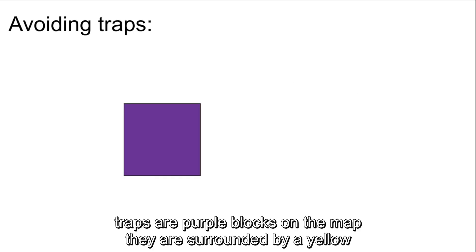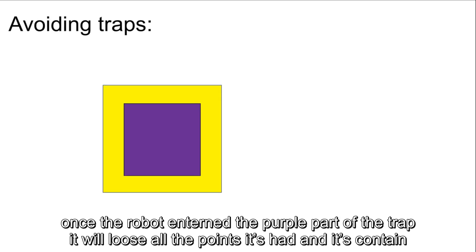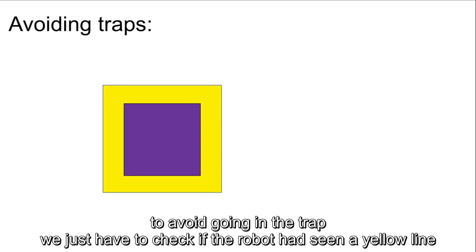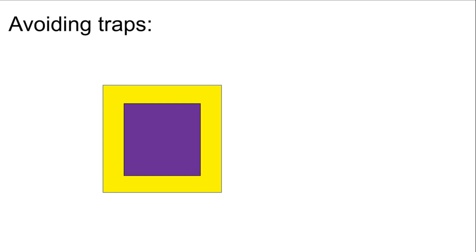Let's talk a bit more in depth about each challenge. Traps are purple blocks on the map that are surrounded by a yellow border. Once the robot has entered the purple part of the trap, it will lose all of the points it had in its container. To avoid going in a trap, we just have to check if the robot has seen a yellow line. If it saw a yellow line, it will just back off.